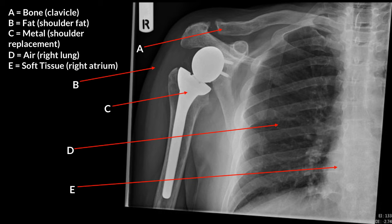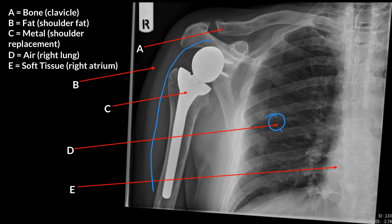Here is a right shoulder X-ray that also includes the right lung fields. The air in the right lung field appears the darkest because it is the least dense object. The bright white object is a metallic right shoulder replacement — it appears brighter white than the surrounding bone because the metallic implant is even more dense than bone, so fewer X-rays pass through it.